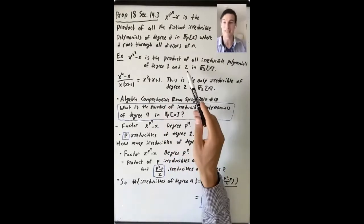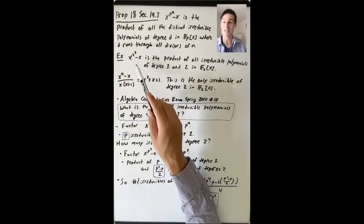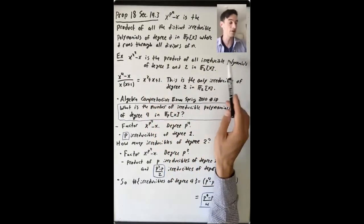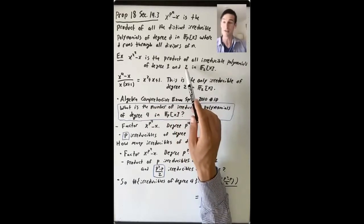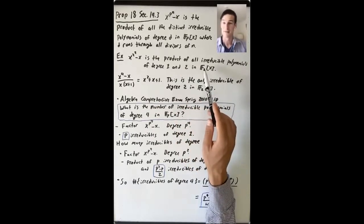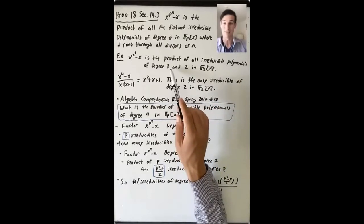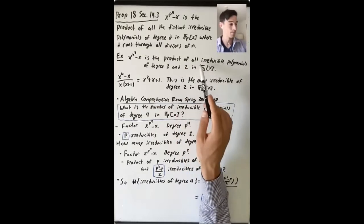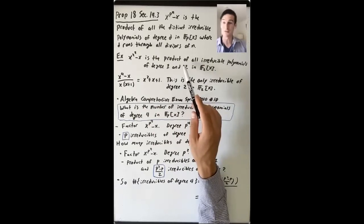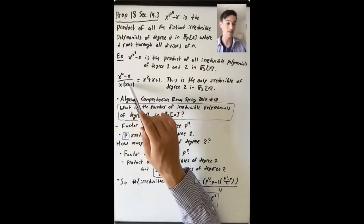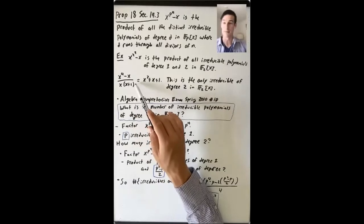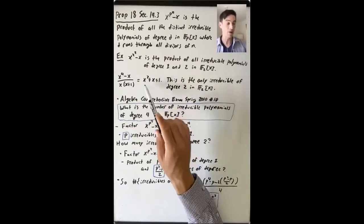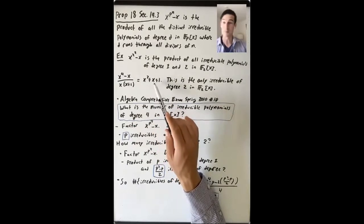Let's look at an example. Take p equals n equals 2. So x to the 2 to the 2 minus x is the product of all irreducibles of degree 1 and all irreducibles of degree 2 in F_2[x]. There are two irreducibles of degree 1: x and x plus 1. Taking x to the 4th minus x and dividing by x times (x+1), you get x squared plus x plus 1.